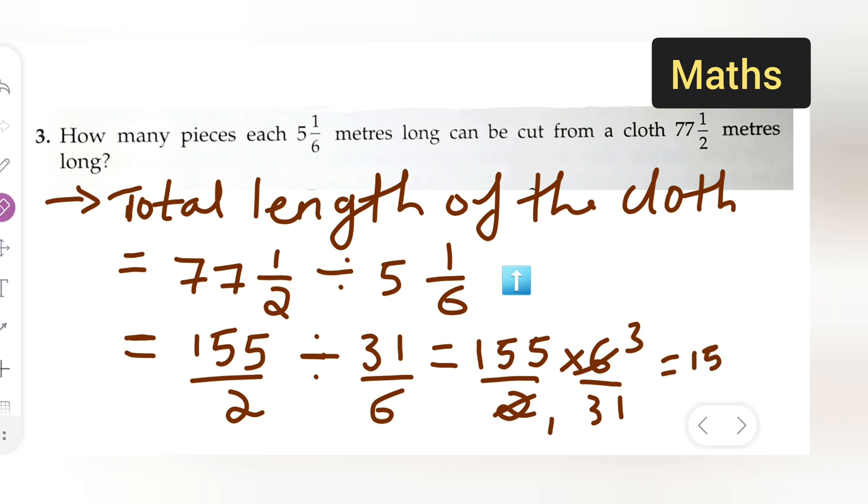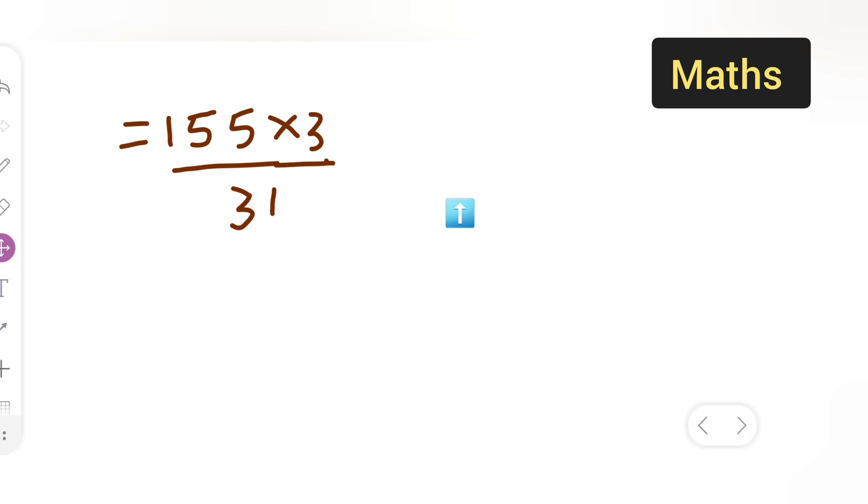Or else you can write it directly. You can write this behind, directly: 155 multiplied by 3/31. Over here, 31 multiplied by 5.